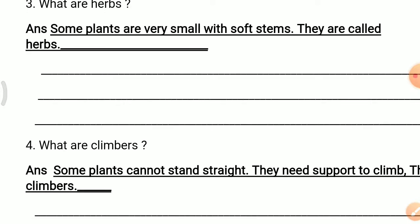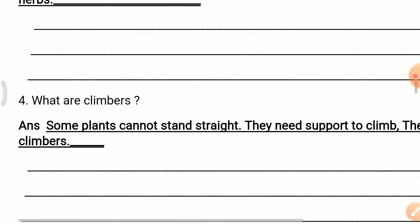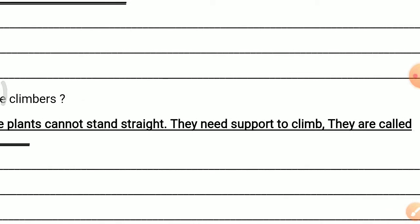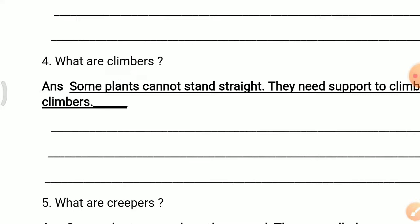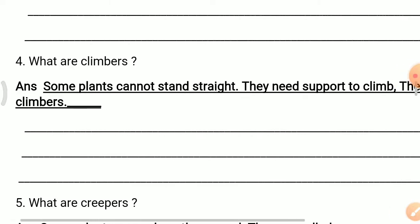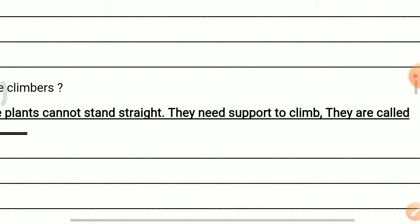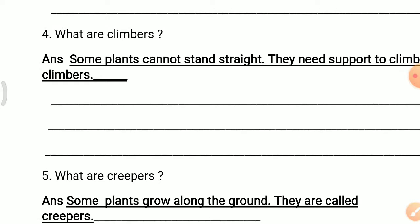Question 4: What are climbers? Answer: Some plants cannot stand straight. They need support to climb. Many plants cannot stand straight — to go upward they need support. They are called climbers.